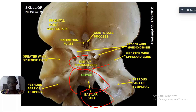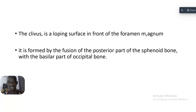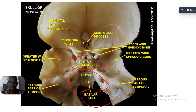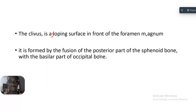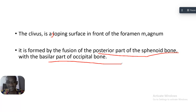So what is the clivus? The clivus is a sloping surface in front of the foramen magnum. It is formed by the fusion of the posterior part of the sphenoid bone with the basilar part of the occipital bone — these two surfaces form the clivus.